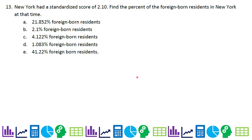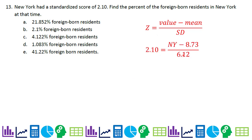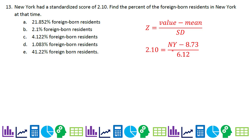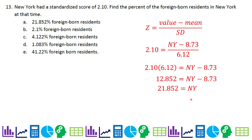Number 13: New York has a standardized score of 2.10. Find the percent foreign-born residents in New York. Using Z = (value − mean) / standard deviation, with the mean of 8.73 and standard deviation of 6.12 from the previous graph, we substitute: 2.10 = (New York − 8.73) / 6.12. Multiplying both sides by 6.12 and adding 8.73 gives 21.852% foreign-born residents.